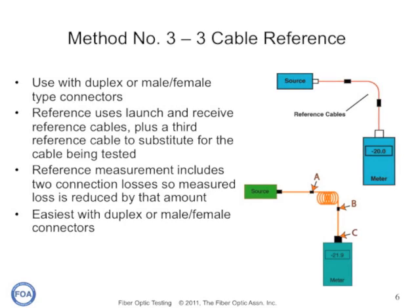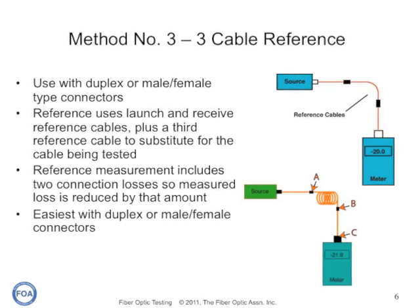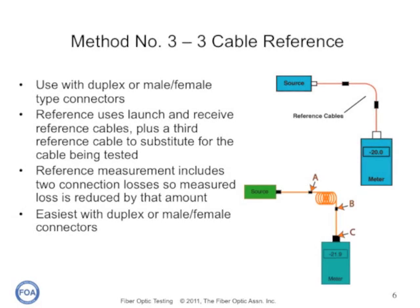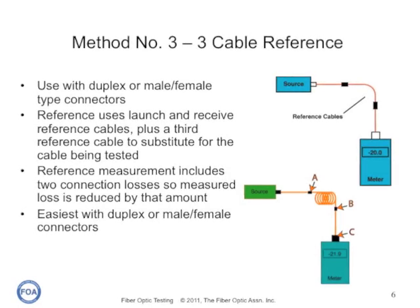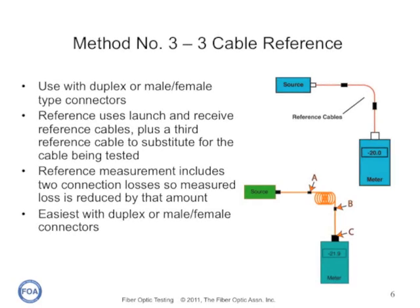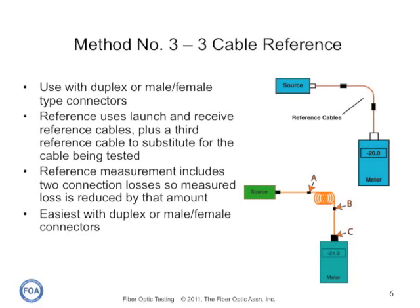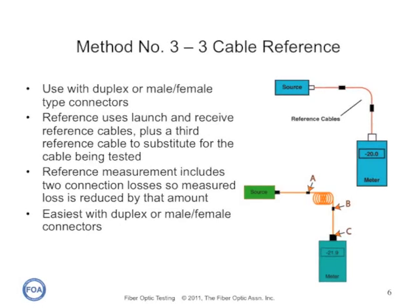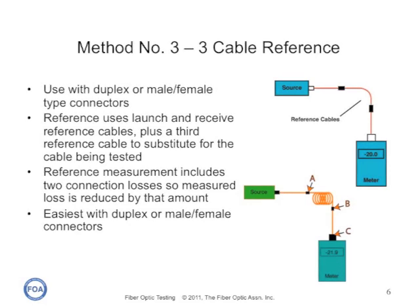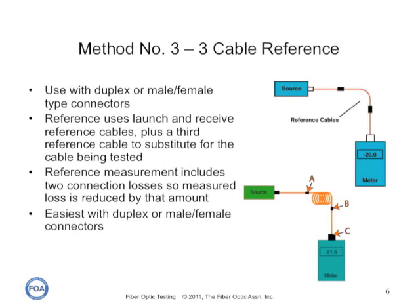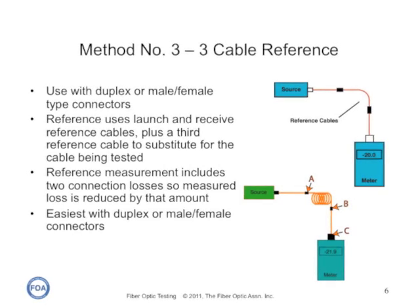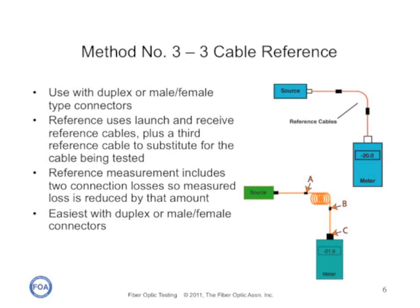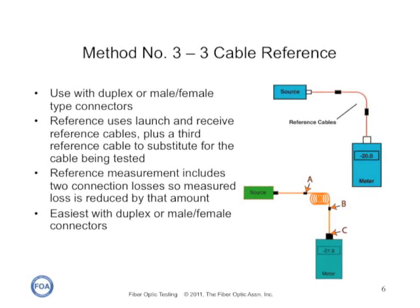Sometimes not only will the connectors on our cable plant not mate with instruments, but they won't mate with each other — for example, with duplex or multi-fiber male-female type connectors like the MTP or MPO. Then we can use a three-cable reference. We use a launch cable on the source, a receive cable on the meter, and a third reference cable in between — our stand-in for the cable plant — which should be a low-loss cable. We make the reference, take it out, and attach our cable plant. But this time we have two connections when we make our reference, so the cable plant loss will be reduced by the amount of loss in those two connections.